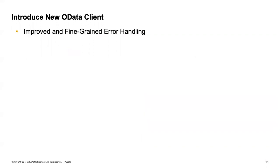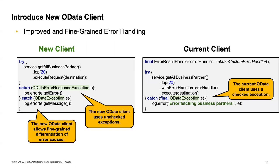Now let's look at how error handling works in both clients. For the current client, it only provides one exception — ODataException — which is a checked exception. The new client provides exceptions that are unchecked, following the industry pattern of favoring unchecked exceptions. Additionally, the new client provides a hierarchy of exceptions, meaning different types of exceptions are available for fine-grained error handling — you can catch the specific exception type and handle the error accordingly.